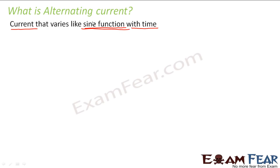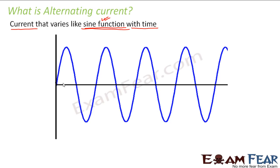That sounds surprising — how can the current vary like a sine function with time? It varies in magnitude: it reaches a maximum value, comes down to zero, and then reaches a negative value. That means it oscillates between a positive maximum value and a minimum value. So how are the electrons flowing to constitute a current of this kind? We will see that next.